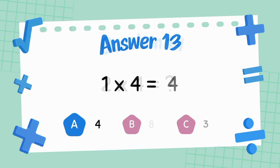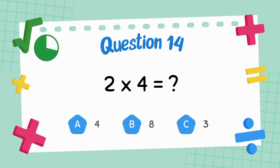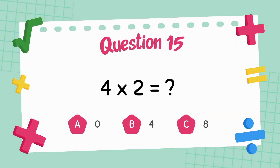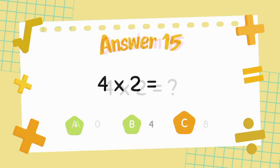What is two multiply four? The answer is eight. What is four multiply two? The answer is eight.